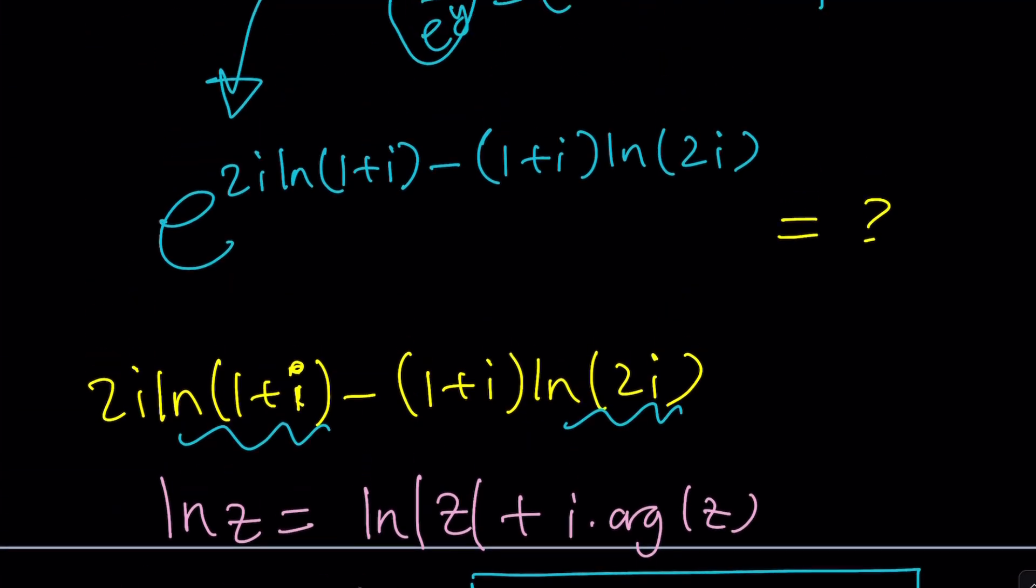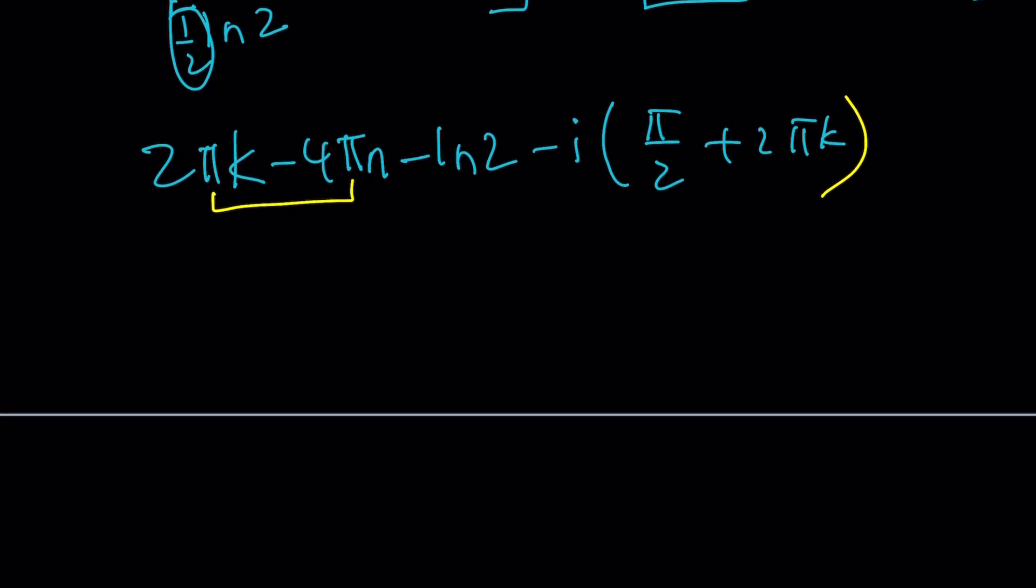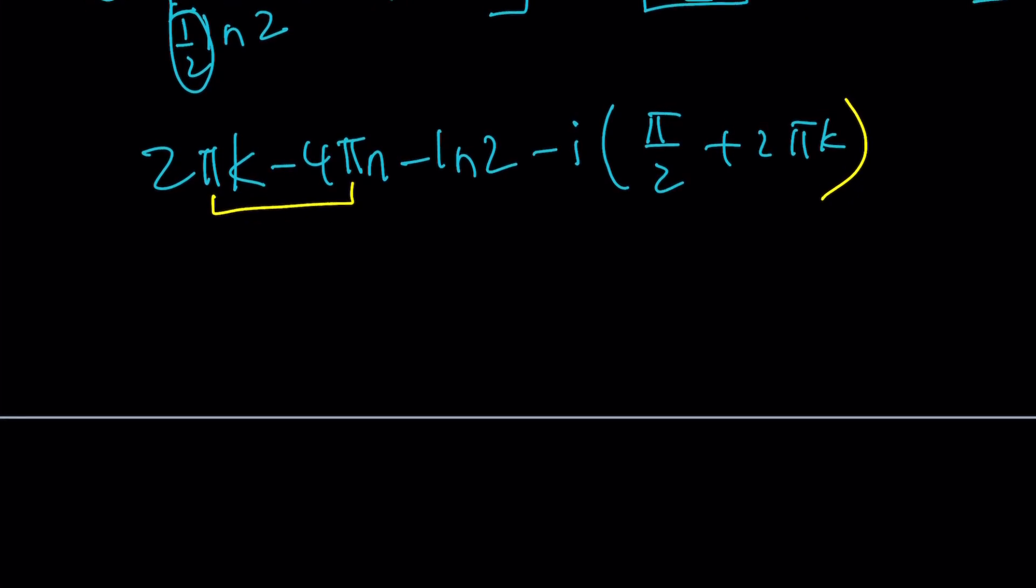We're only dealing with this part, because once we simplify it, we're going to do e to the power of that. Make sense? So how can I simplify it? Well, I don't think you can that much. This is still complicated. So let's go ahead and simplify this. Set k and n both equal to 0, so we can deal with the principal values, because they're going to be fairly simple. So now we're going to get negative ln 2 minus i times pi over 2. Beautiful.